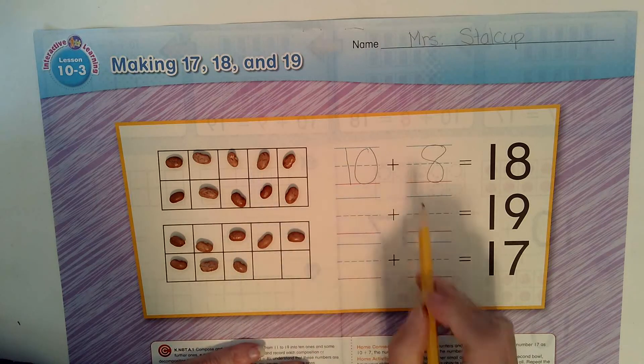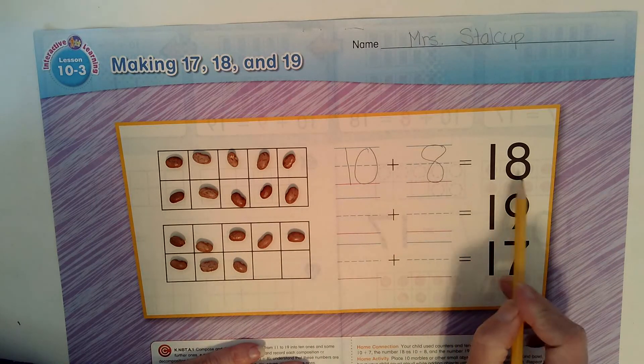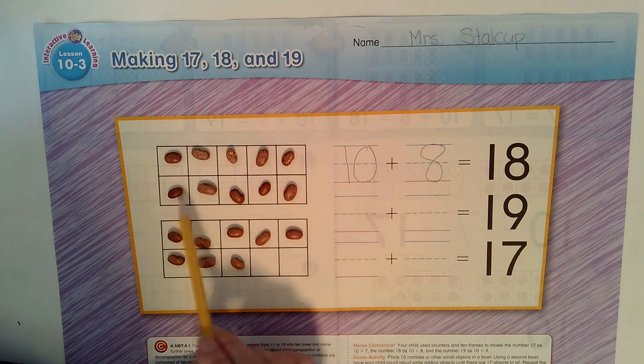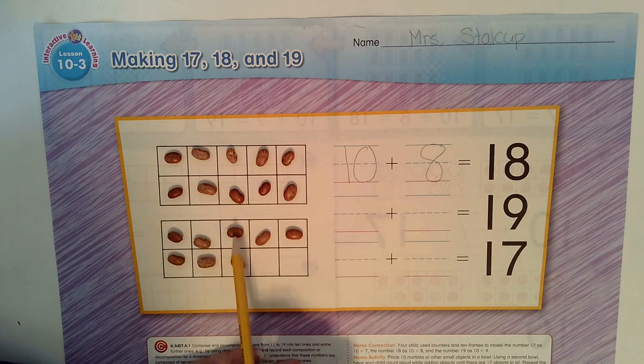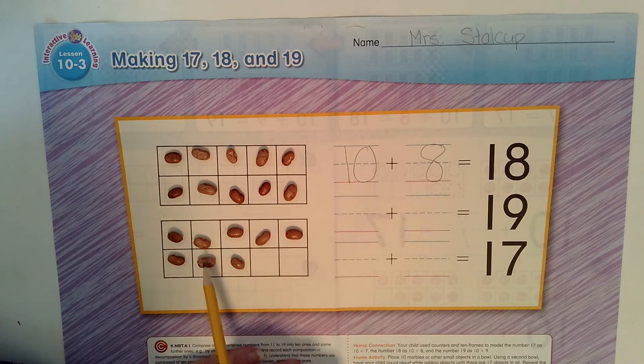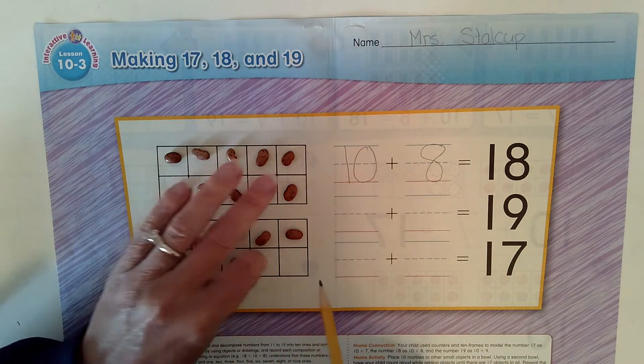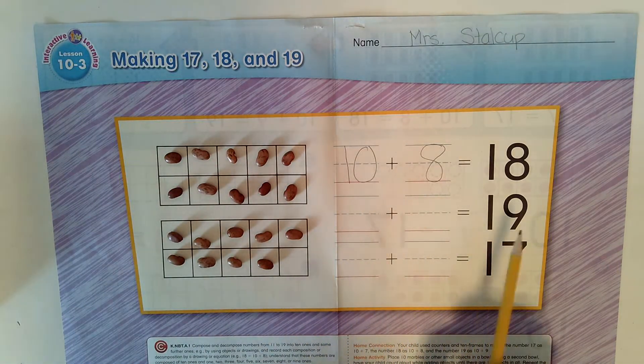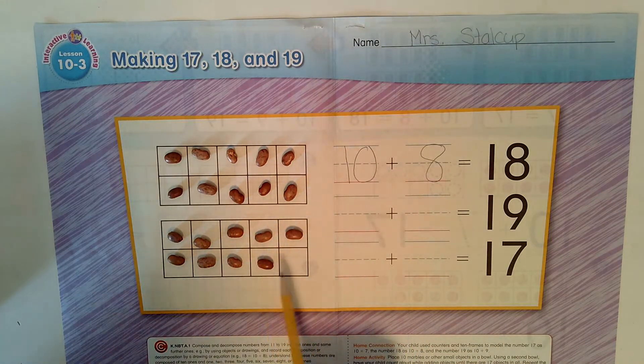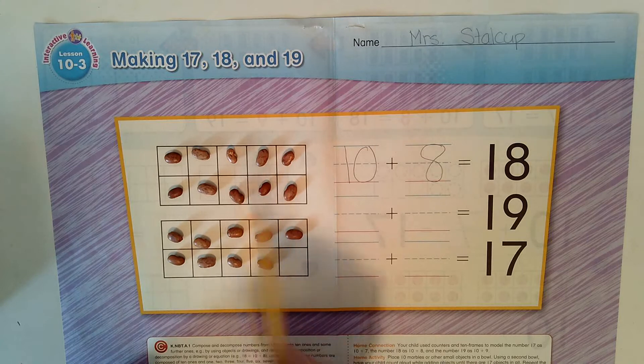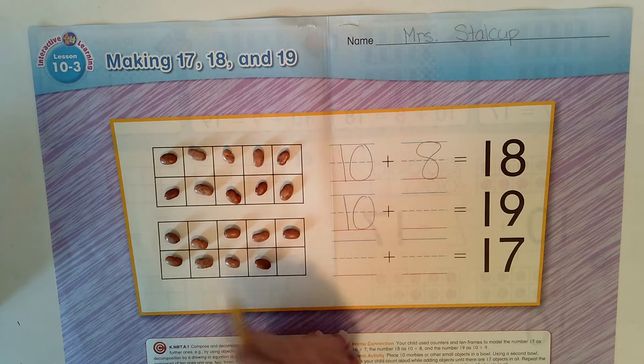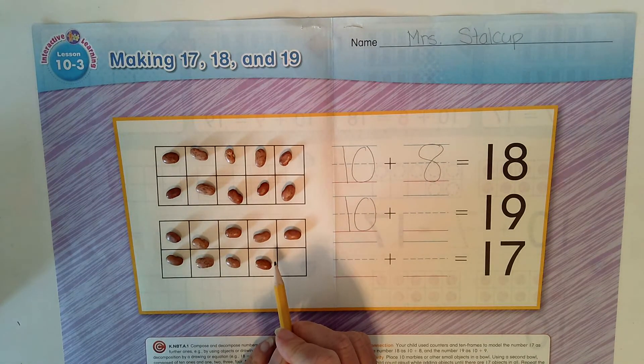10 plus 1, 2, 3, 4, 5, 6, 7, 8. 10, 11, 12, 13, 14, 15, 16, 17, 18. I need to add one more bean. 19. So when I'm making 19, ooh, look, I almost covered both 10 frames, but not quite. So one tens frame is covered. So I have 10 plus, do you know how many that is without counting?